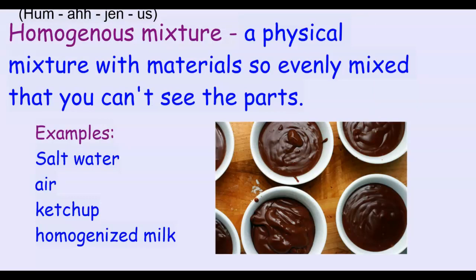Now let's look deeper into mixtures. There are so many different kinds of mixtures, and we can classify them into two main groups. Let's start with the homogeneous. A homogeneous group or mixture is a physical combination of materials so evenly mixed that you can't see the parts. Many mixtures are homogeneous. Smoothly mixed pudding is a great example - you can't see the sugar, chocolate, milk, or other ingredients because they're so carefully blended.